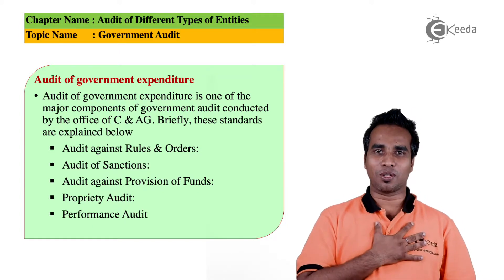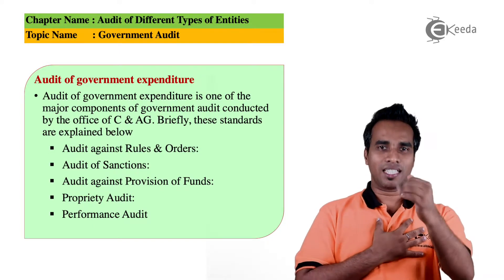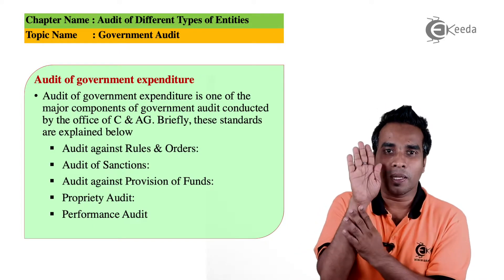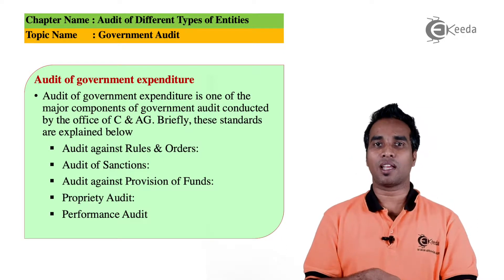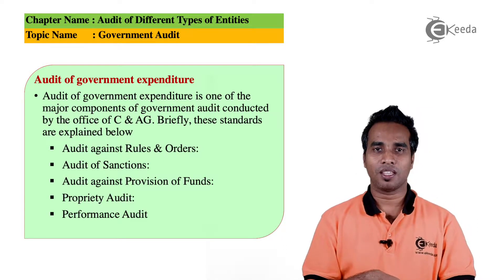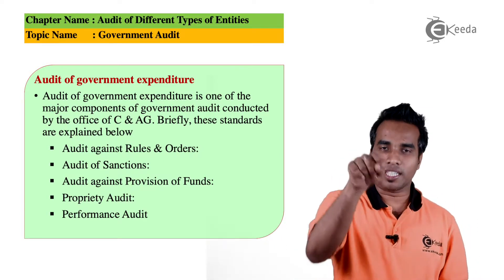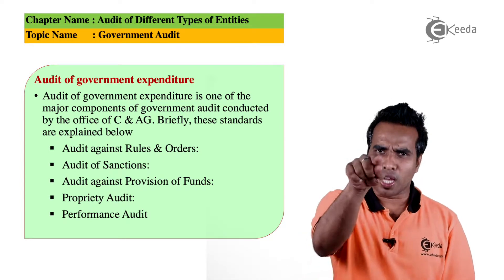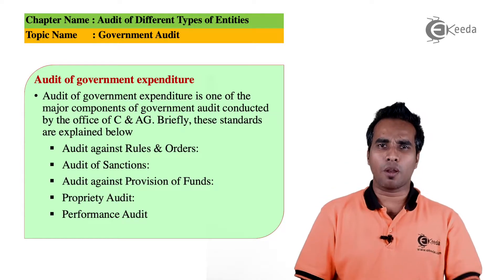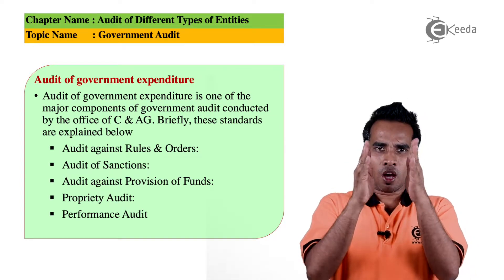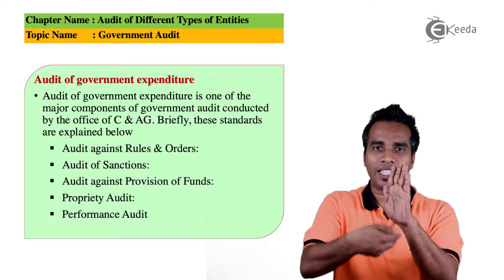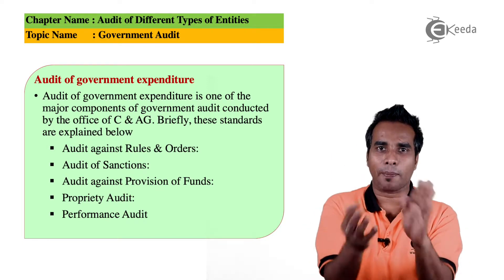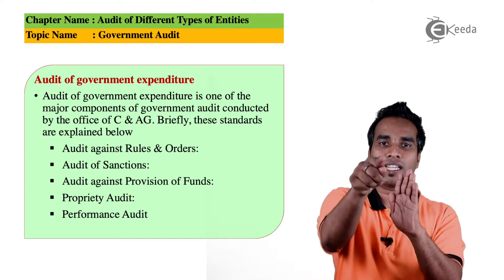In Proprietary Audit, all public money must be properly utilised. It means we use our money like money — the auditor will check whether government money has been used appropriately and whether investments are justified.